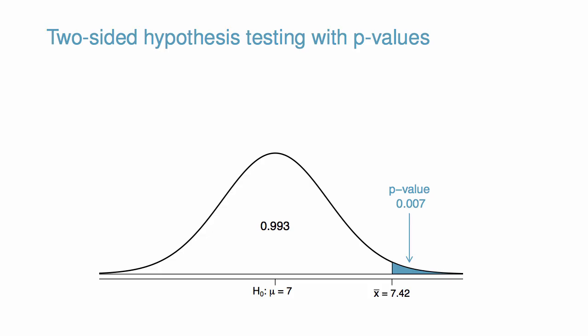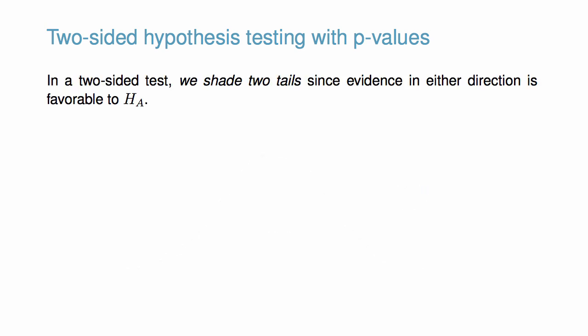Before, with a one-sided test, we shaded the single tail in the direction of the alternative hypothesis to calculate the p-value. In a two-sided test, we shade two tails since evidence in either direction is favorable to the alternative hypothesis.